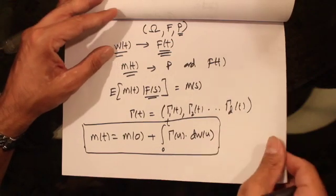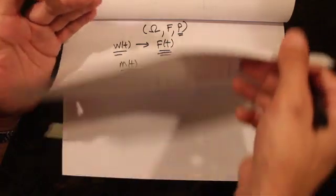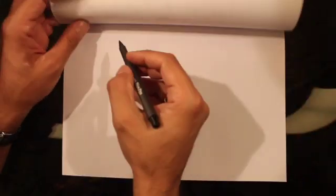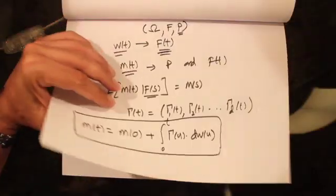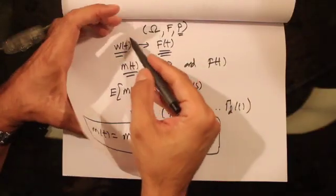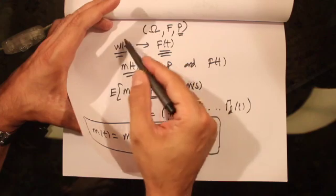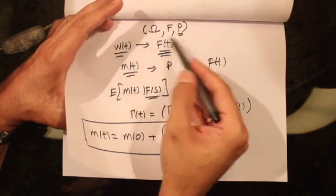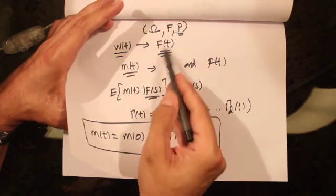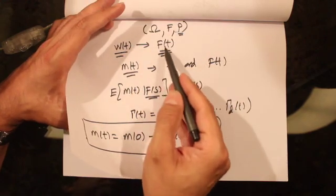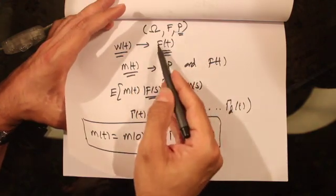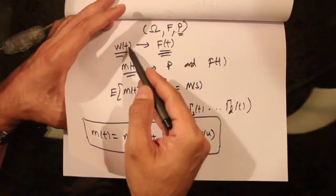We can take this further. We already have defined this to be a Brownian motion under P, and F_t is a filtration generated by this Brownian motion.